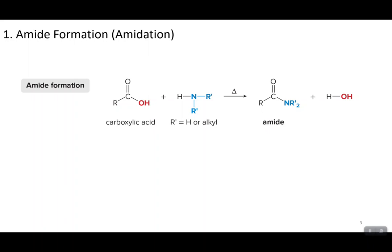In amidation reactions, it is important that your nitrogen-containing reactant has a hydrogen available that it can combine with the OH of your carboxylic acid. If this hydrogen is not available, then this OH group will not be able to come off your carbonyl carbon. In the reaction shown here, we do have that hydrogen available, so your OH and the H will combine to form water. Then the carbonyl carbon can combine with the nitrogen from your other reactant. This is your amide bond, where your nitrogen has at least one group that is a carbonyl carbon.